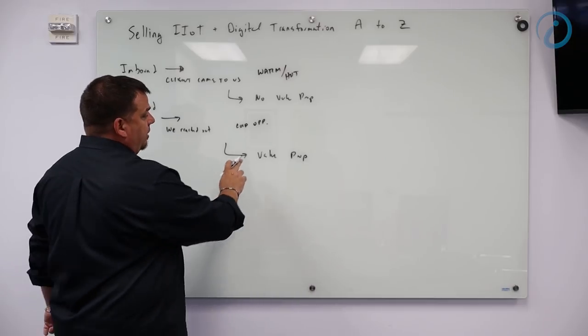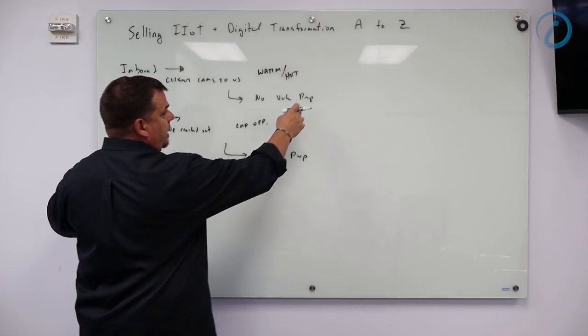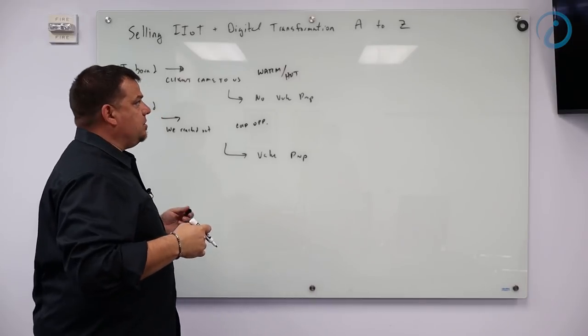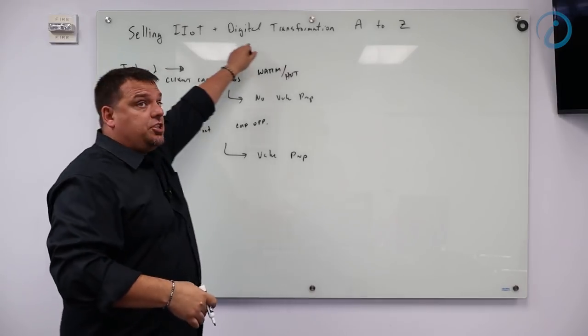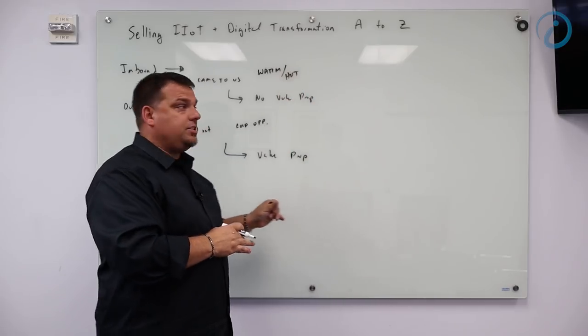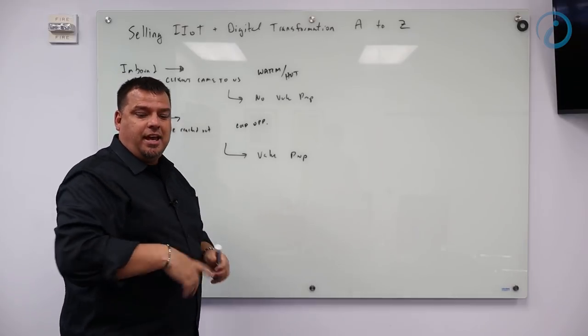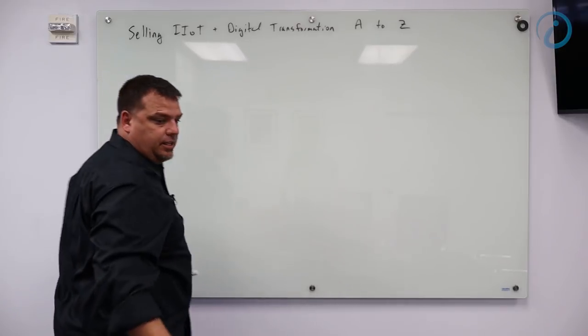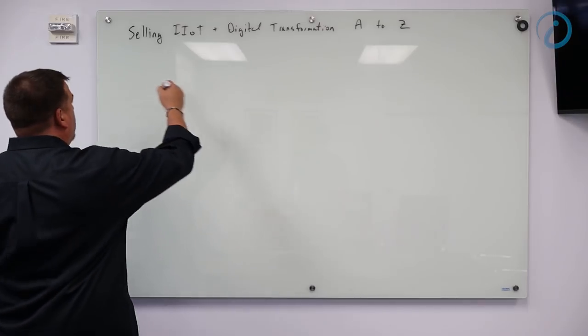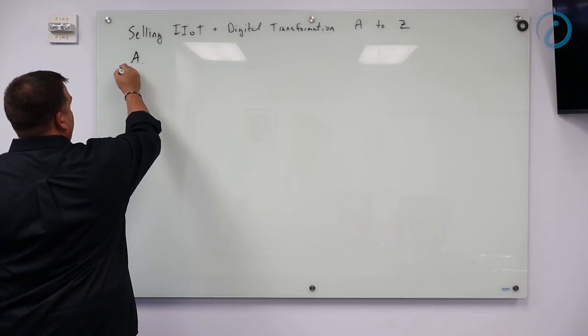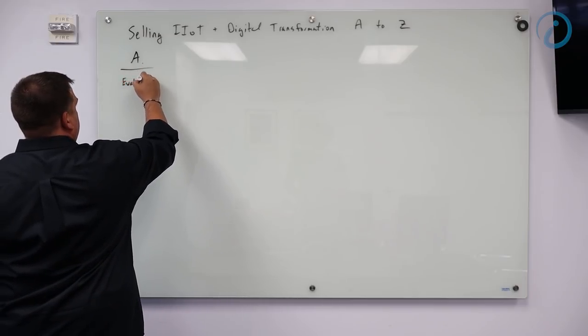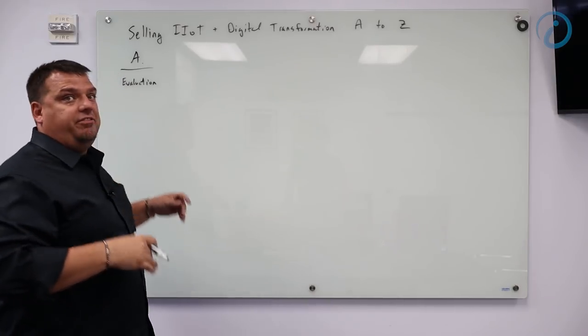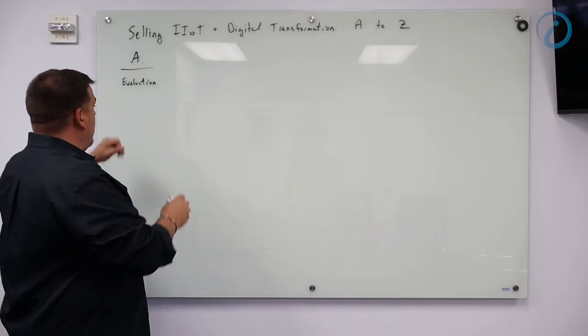Now, what I'm going to do is I'm going to show you what it means once we've sold the value proposition. How do we go from A to Z? Once the client is convinced IIoT, digital transformation and enterprise class is for me, this is how we're going to do more with less, I'm going to show you the A to Z part. A starts with after they're convinced of the value proposition. We have a whole playlist on the value proposition selling IIoT to executives. Step number one, we're going to do A. Step number one is evaluation.